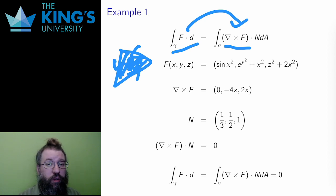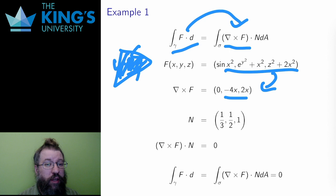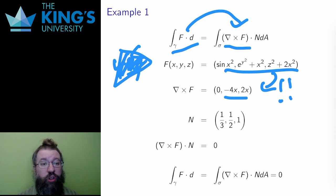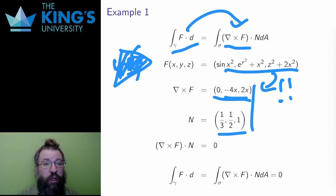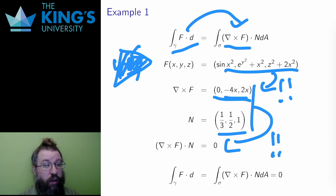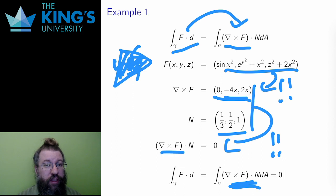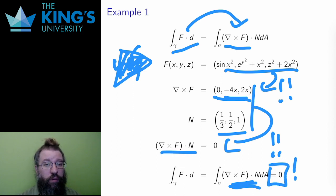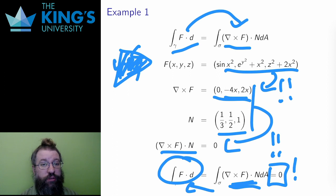So I calculate the curl. In this case, the curl is also a lot simpler than the original field. To do the flux integral, I need the dot product of the curl with the normal. The dot product of the field with the normal here is zero, which is even better, because that means the flux integral — the integral of the field dot the normal — is zero. It's just the integral of zero over the whole region. And then going back from Stokes' theorem, it tells me that the original line integral is also zero.